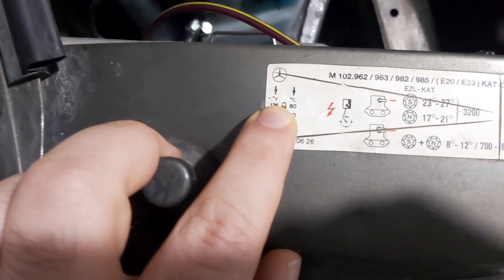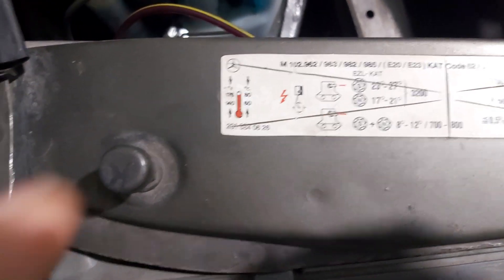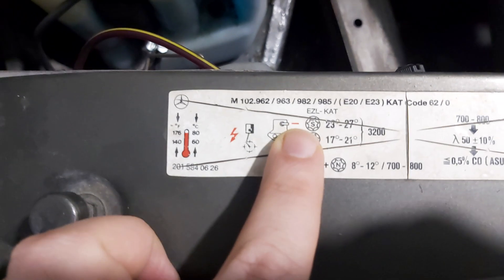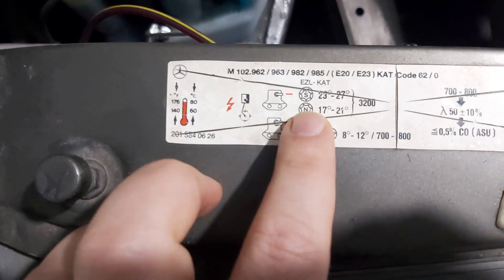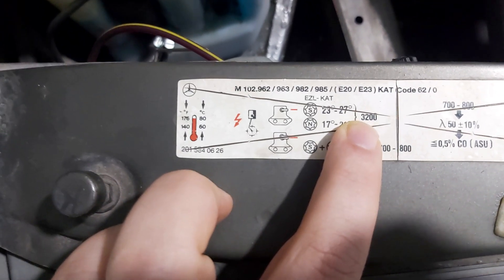Let's read this. This is your dwell angle at 3200 RPM.